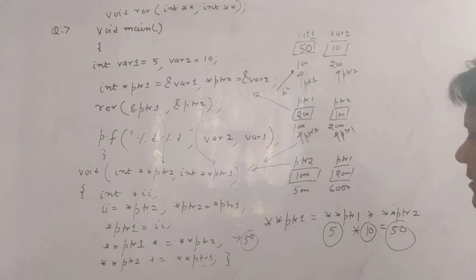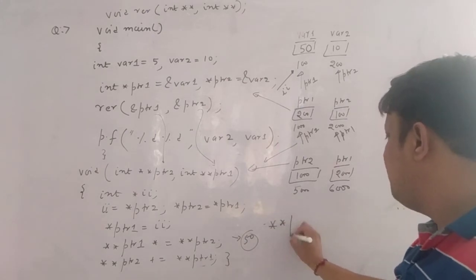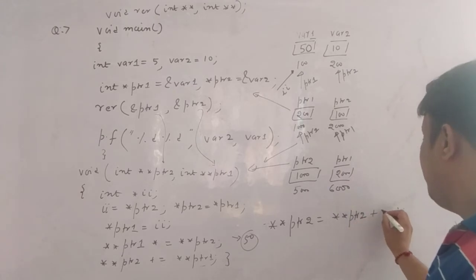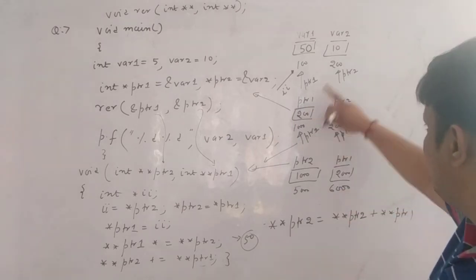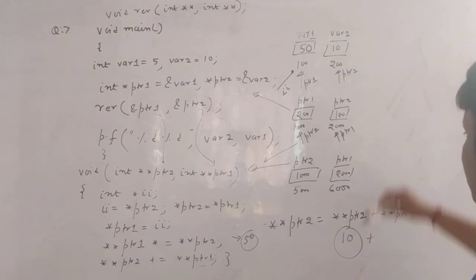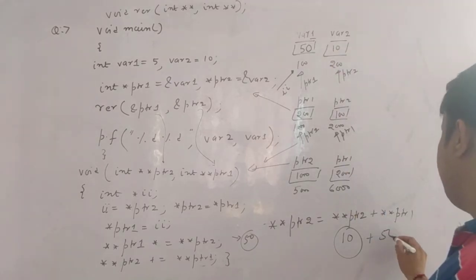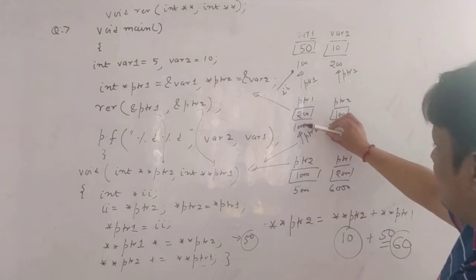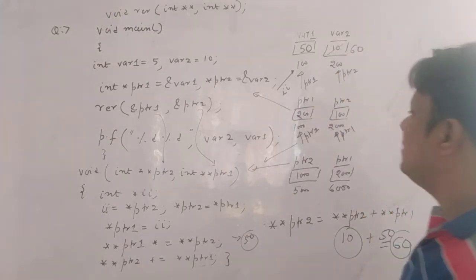Moving on to the next expression: **ptr2 is equal to **ptr2 plus **ptr1. ptr2 is pointing at 1000, 1000 star is 200, 200 star is 10, so this is your 10 plus **ptr1. ptr1 is pointing at 2000, 2000 star is 100, 100 star is 50. So this is 50 plus 10 equals 60, and 60 you are storing to **ptr2. ptr2 is 1000, star is 200, and 200 star changes to 60.